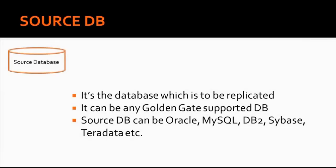The first component of the Golden Gate workflow is the source DB. It is not the integral part of the Golden Gate architecture, but it is the database which is to be replicated by Golden Gate. A source database can be any database which is supported by Golden Gate. Before you actually start using Golden Gate for any source database replication, make sure you cross-check if that particular source database is supported by the Golden Gate release version.